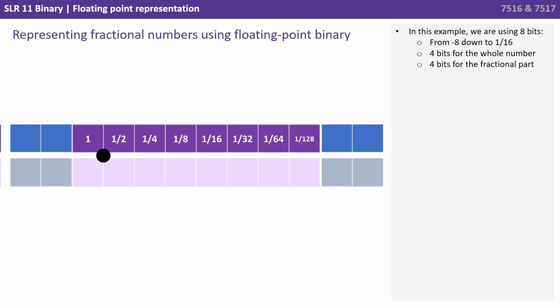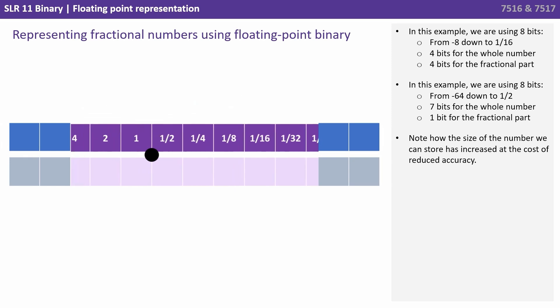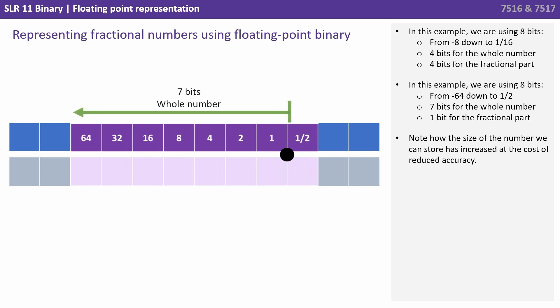In this example, we're using 8 bits from minus 8 down to 1/16. 4 bits for the whole number part and 4 bits for the fractional part. In this example, we're using 8 bits from minus 64 to 1.5, but we're using 7 of the bits for the whole part and only 1 bit for the fractional part.